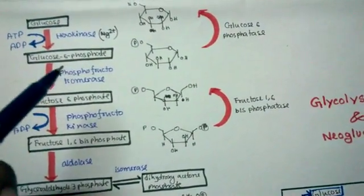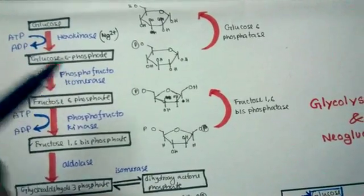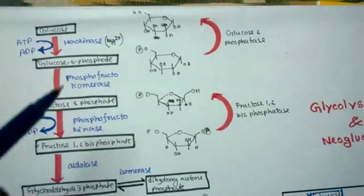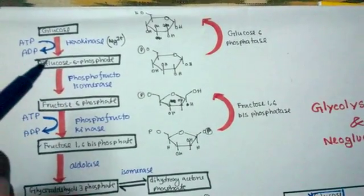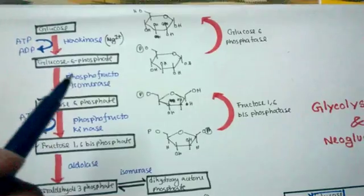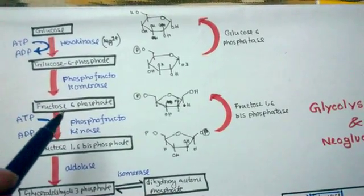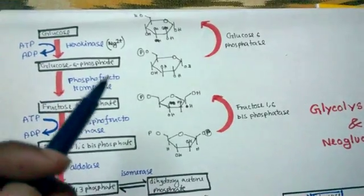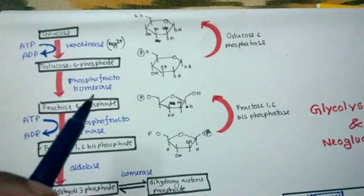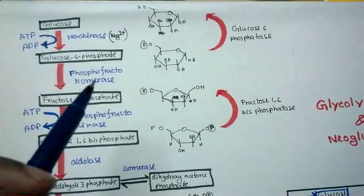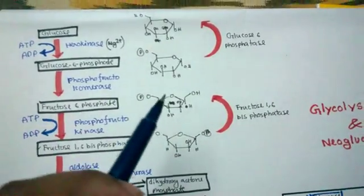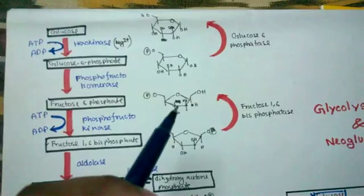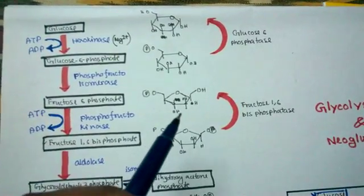The second step involves glucose-6-phosphate. This is an isomerization reaction because glucose and fructose are isomers of each other — one is the keto isomer and the other is the aldose isomer. The enzyme responsible is phosphoglucoisomerase. As you can see from the structure, the structure is just isomerized but the carbon number remains the same.